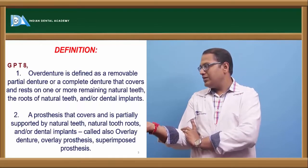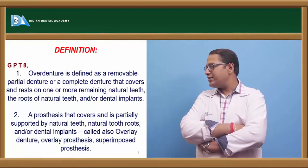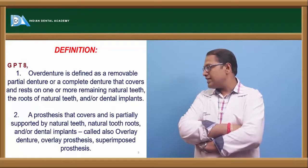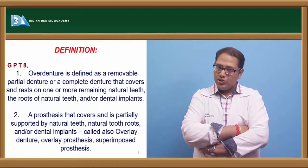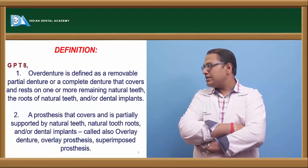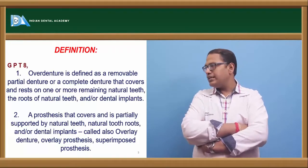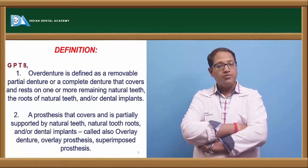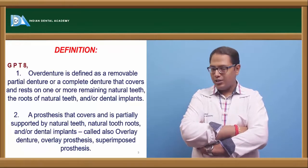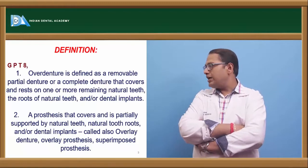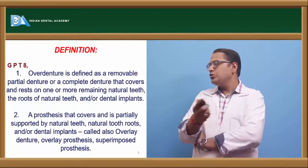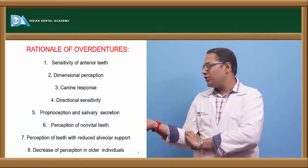According to GPT-8, overdenture is defined as a removable partial denture or a complete denture that covers and rests over one or more remaining natural teeth, or dental implants. It is a prosthesis that covers and is partially supported by natural teeth or natural tooth roots, which can be vital or non-vital. After endodontic treatment, it is also called overlay denture, telescopic overlay denture, superimposed prosthesis — these are different synonyms for overdenture.